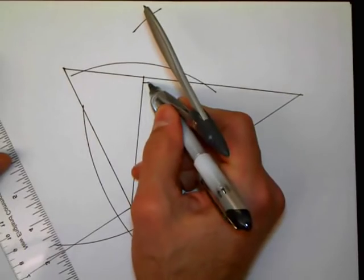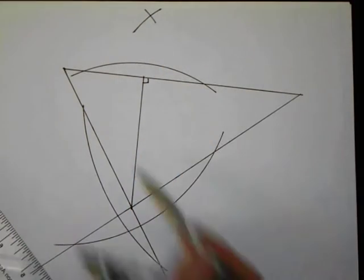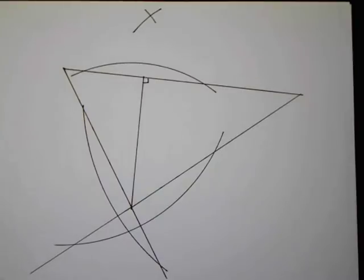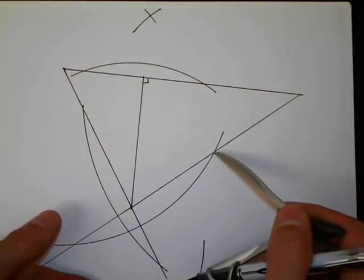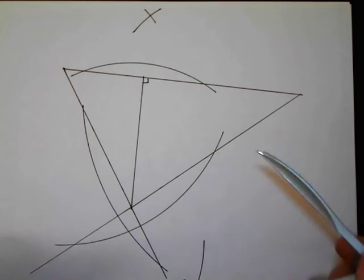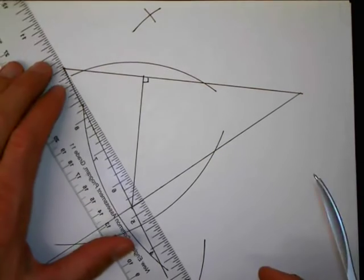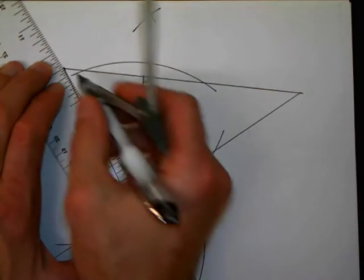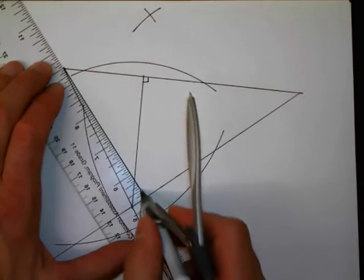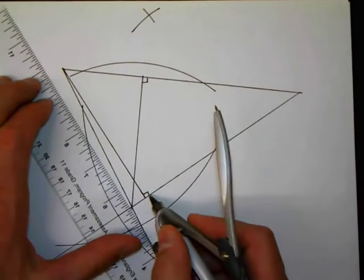So this is perpendicular. Not a perpendicular bisector, just a perpendicular. I'll do the same thing for this one. Intersection. Intersection. A line through that intersection back up to the original vertex. There we go.